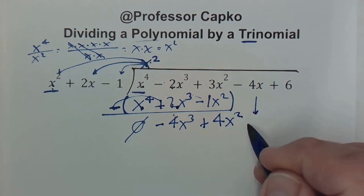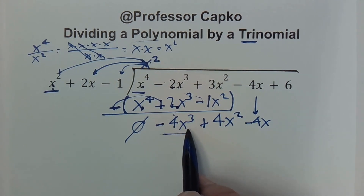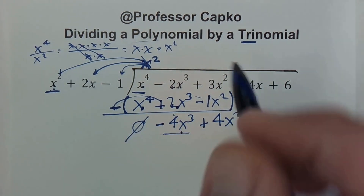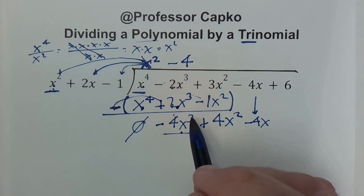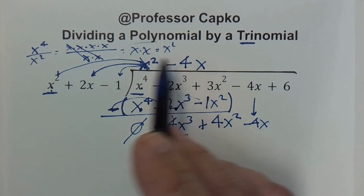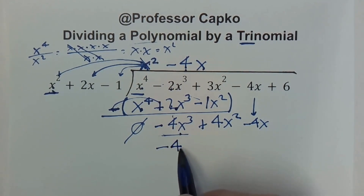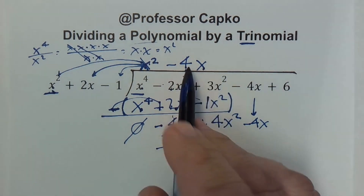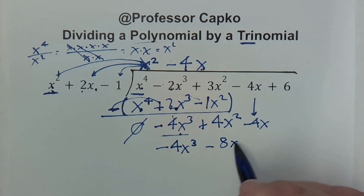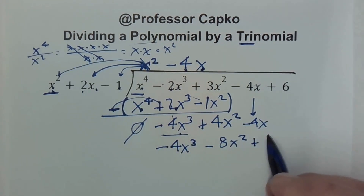Now I'm going to bring down the next term, which is minus 4x. I look at the first term negative 4x³ and ask how many times does x² go into that — it goes negative 4 times, and since I have x³ and x², I just need one x, so negative 4x. Now I multiply negative 4x by all three terms: negative 4x times x² is negative 4x³, negative 4x times 2x is negative 8x², and negative 4x times negative 1 is positive 4x.